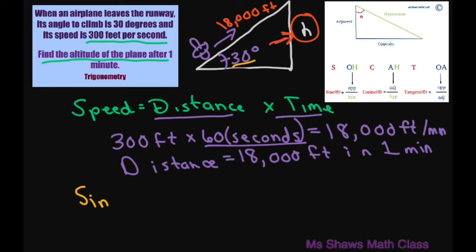So we have sine of 30 degrees is going to equal opposite over hypotenuse. Now opposite is your h, and your hypotenuse is 18,000 feet.